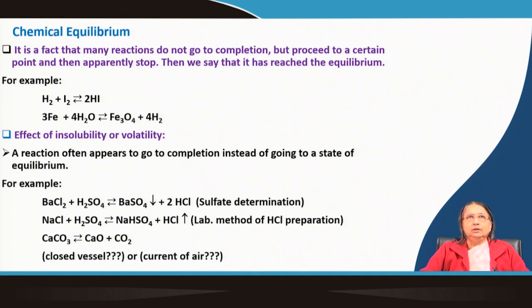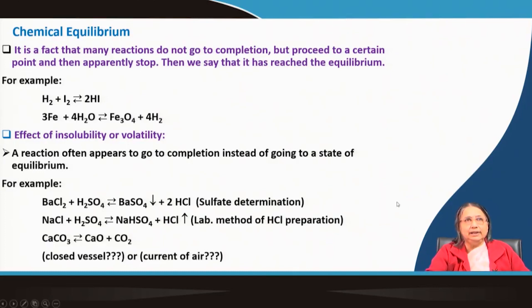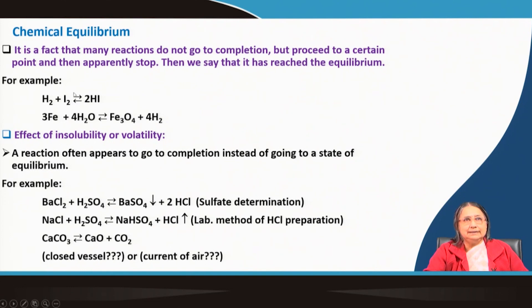Many reactions do not go to completion; they proceed to a certain extent and then apparently stop. We say that chemical equilibrium has been reached. For example, hydrogen gas reacts with iodine in vapour form to form hydroiodic acid (HI). All species are in the gas phase, and this reaction reaches equilibrium after some time, depending on temperature and the presence or absence of a catalyst.